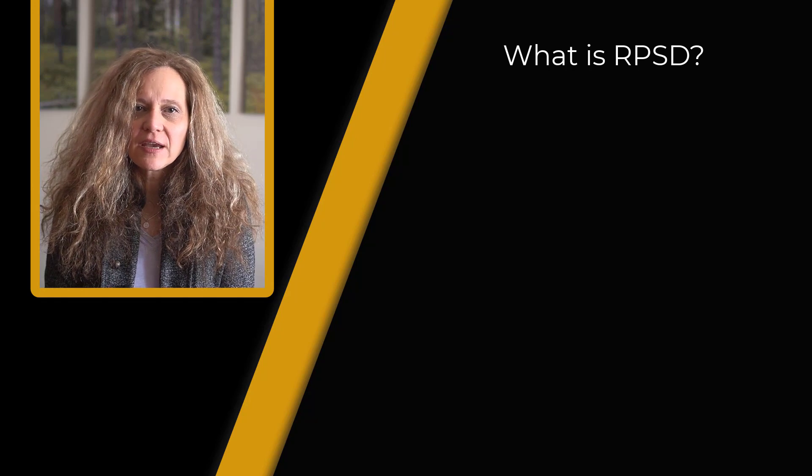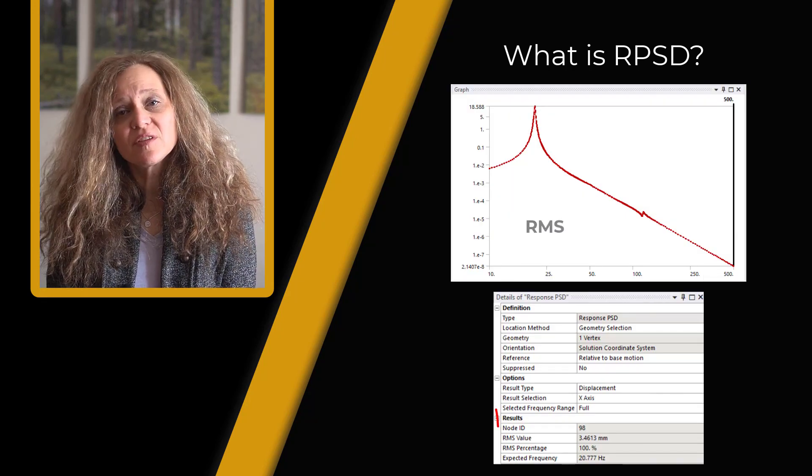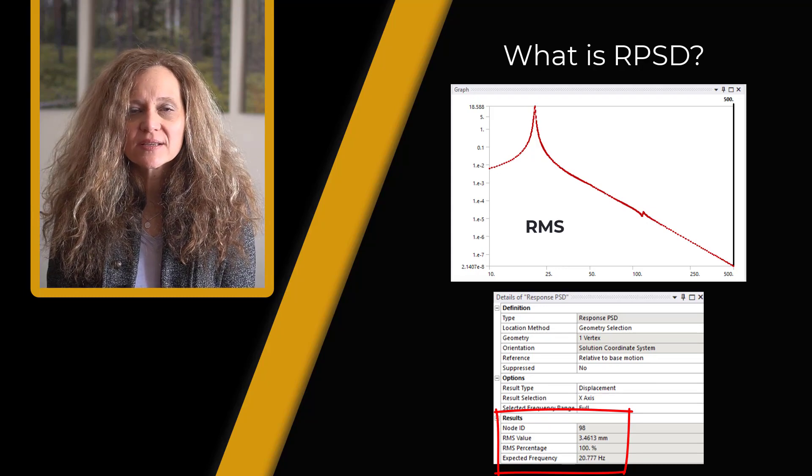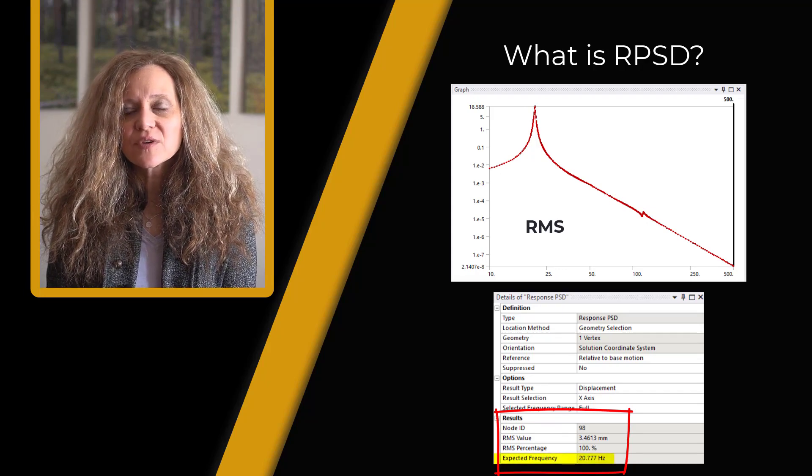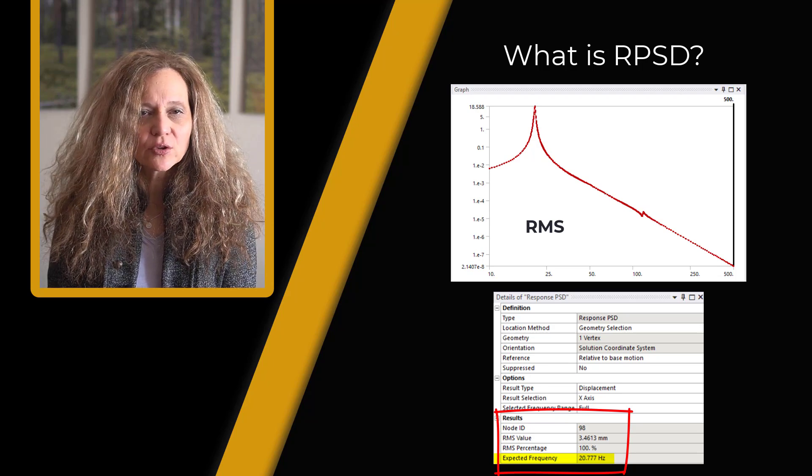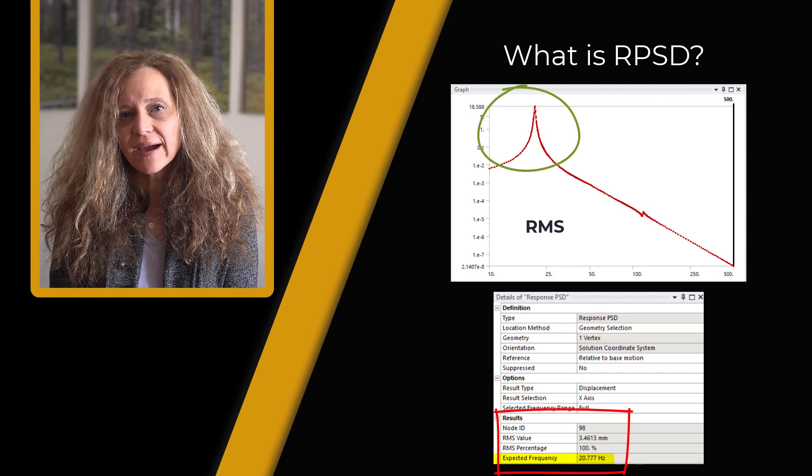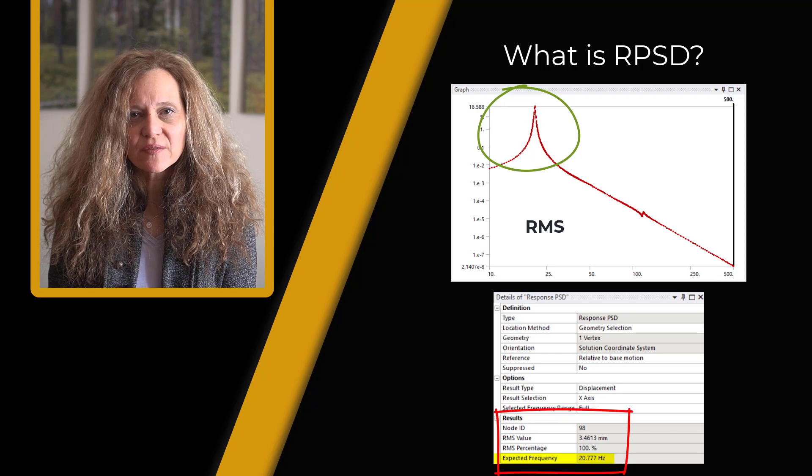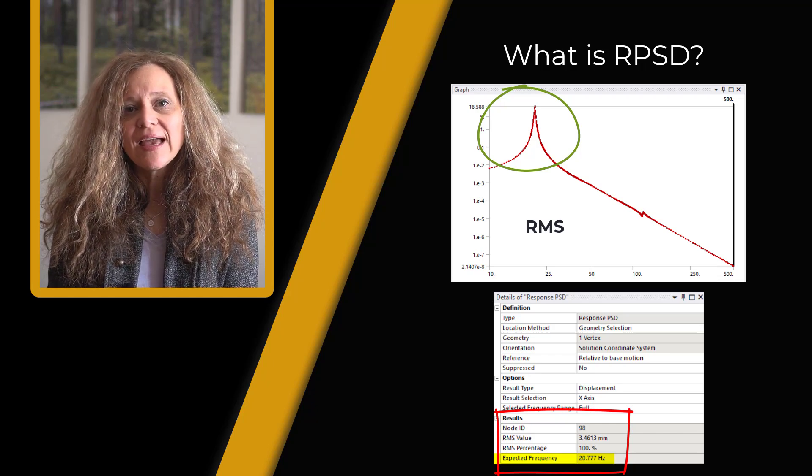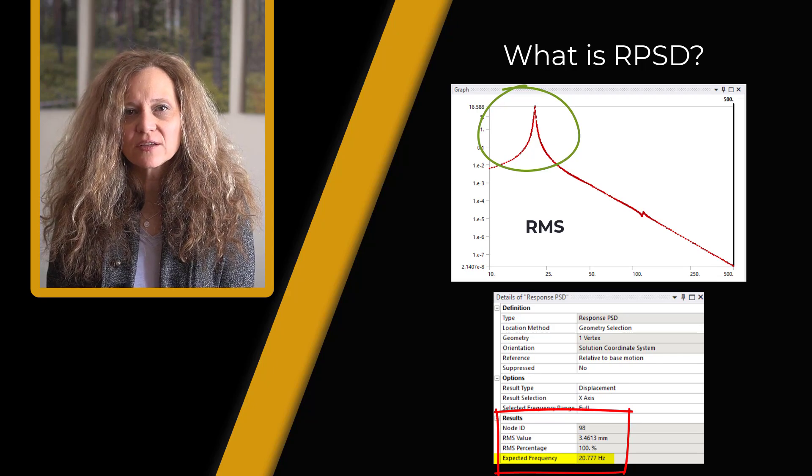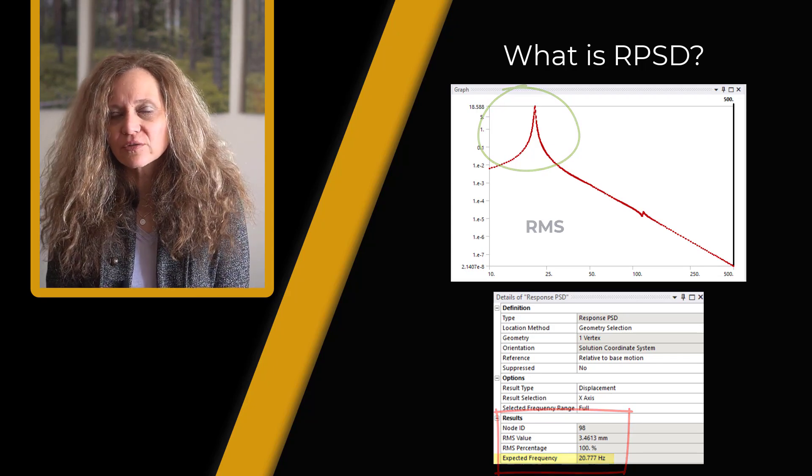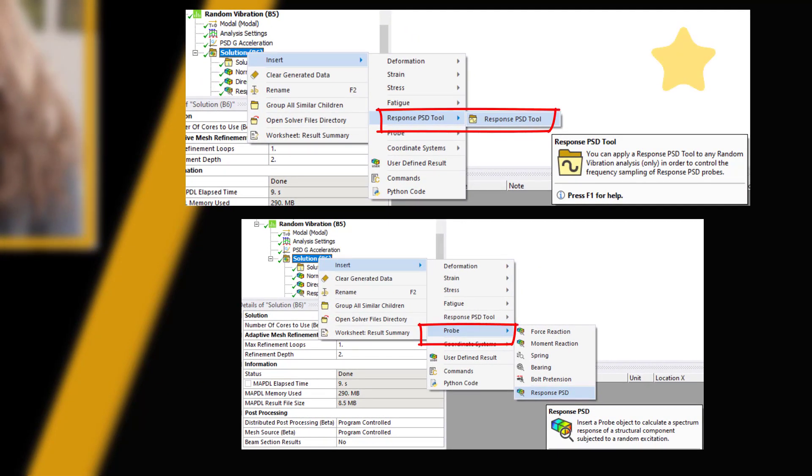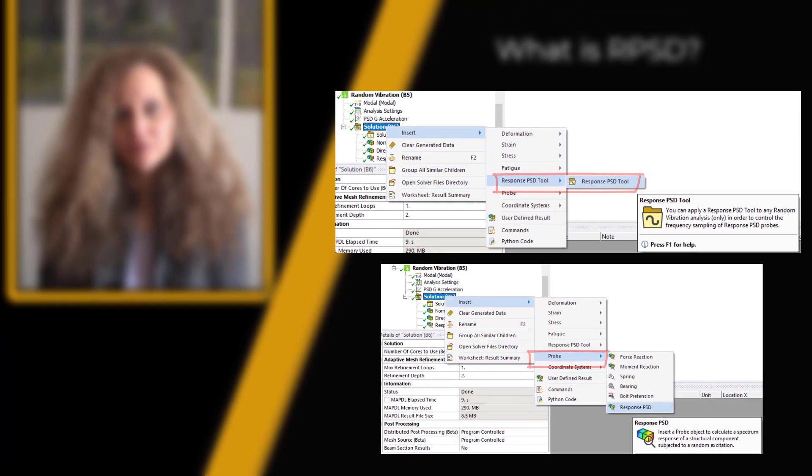The centroid of the area under the response PSD probe with respect to frequency is referred to as expected frequency. The expected frequency can give you an indication if the output or power of the response is occurring at or near a dominant natural frequency. This can sometimes help an engineer understand which frequencies are contributing the most to the response and then one could consider changing the design to shift or even eliminate that natural frequency. It is better to use response PSD tool compared to standalone response PSD probe because the former offers more options for the frequencies of the output.